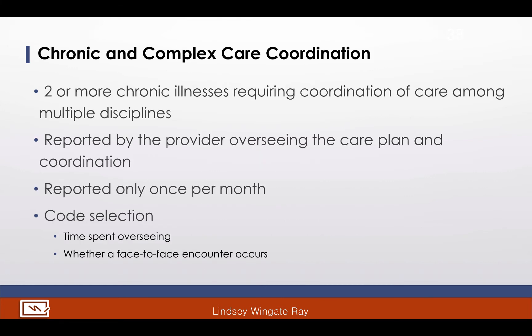Lastly, we have sections to report oversight of chronic and complex chronic care patients and transitional care management services. Chronic care management and complex chronic care management services are reported based on time. Patients must have two or more chronic illnesses that require coordination of chronic care management services. The patient's chronic conditions must meet certain required elements in order to report codes 99487, 99489, or 99490. The codes in this category can only be reported once in a calendar month. Patients who receive this type of service live at home or in a domiciliary, rest home, or assisted living facility.